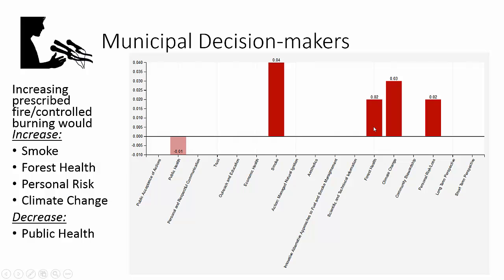When we run the scenario of increasing prescribed or controlled burns in the area, we can see how the community anticipates being impacted. They see that when you increase controlled burning, smoke is going to increase, but forest health overall is going to increase — so they see a benefit. However, it's also going to increase personal risks and decrease public health.